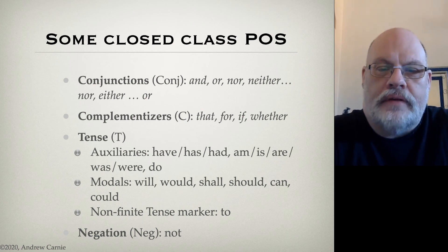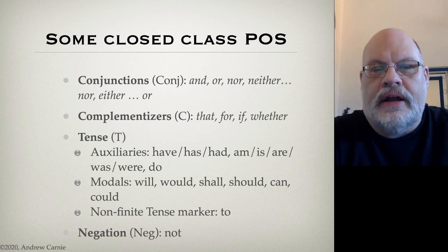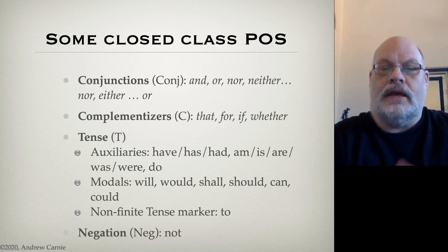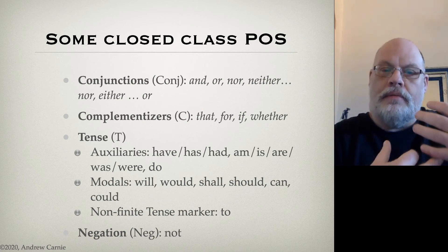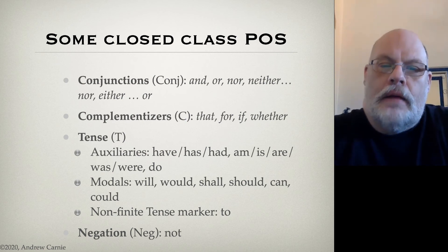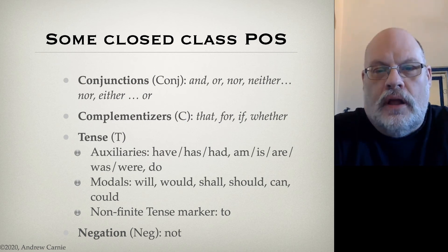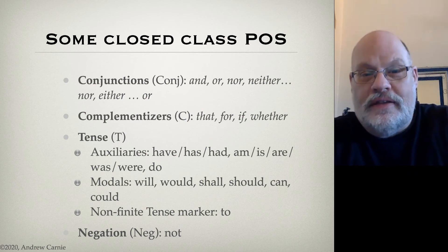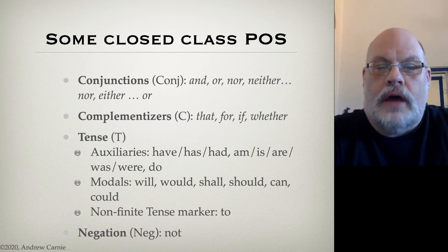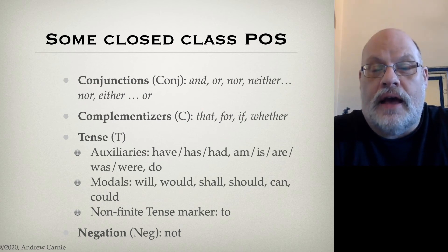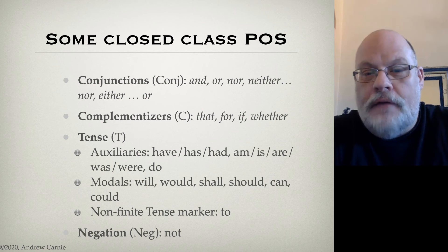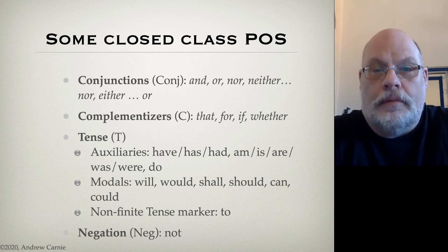The next category, which we call complementizers, is probably new to you. In traditional grammar, they're called subordinating conjunctions. But in linguistics, we call them complementizers because they indicate that something is the complement to another — complement being the accompaniment. These are typically used for embedding one clause inside of another. A clause is a kind of sentence. Typical complementizers include: "that" as in "I said that Bill left," "if" as in "I asked if Bill left," "whether" as in "I asked whether Bill left," and "for" as in "I asked for Bill to leave."